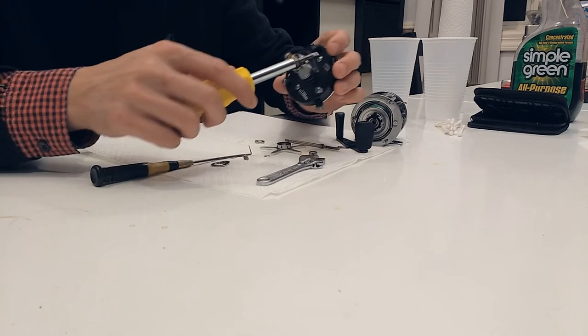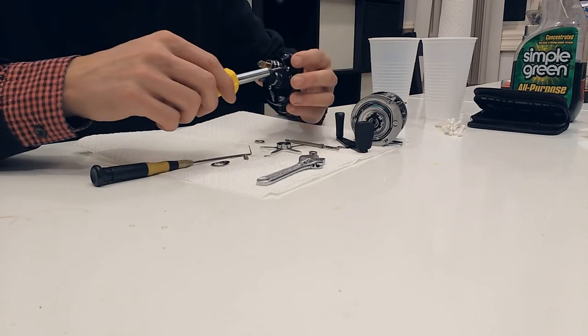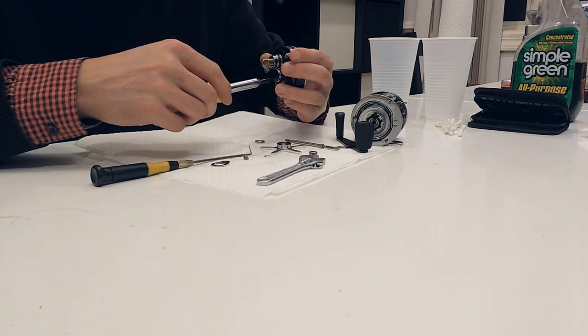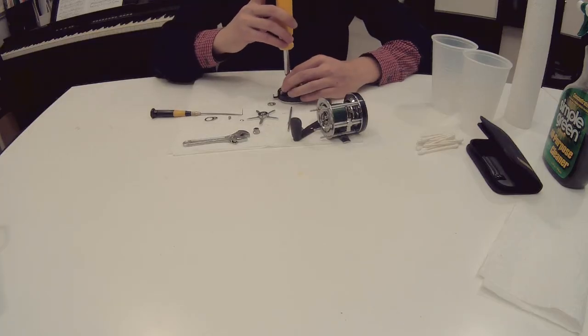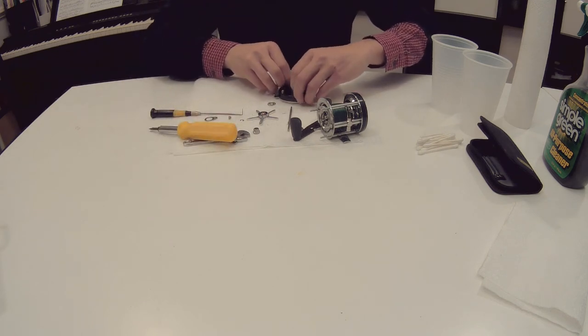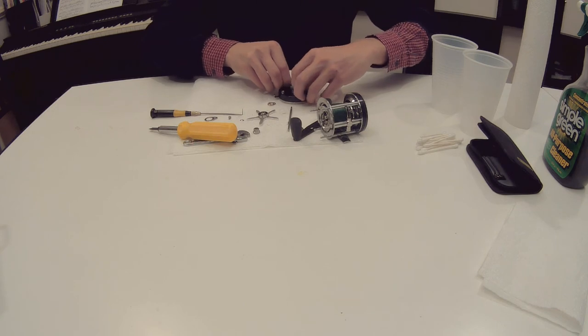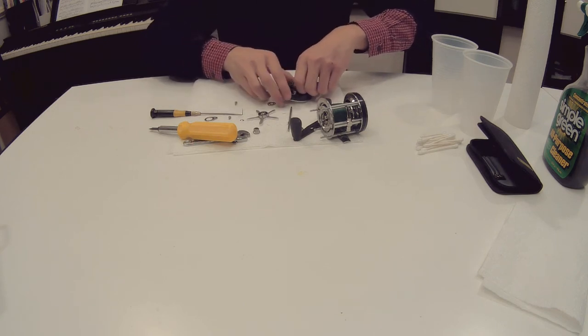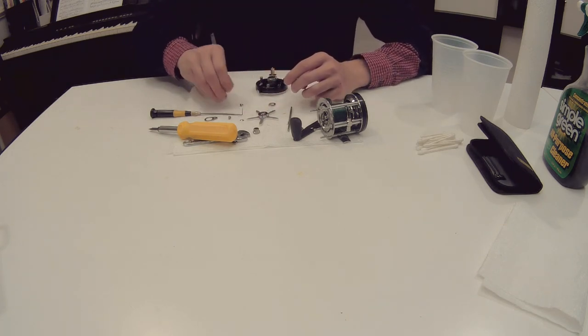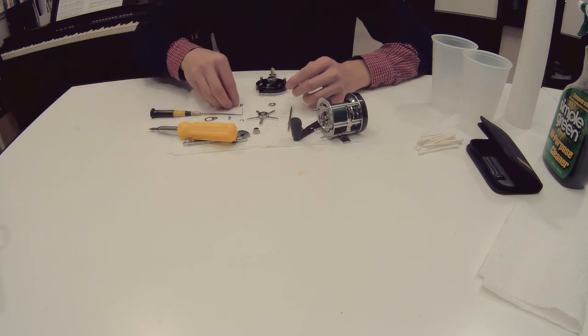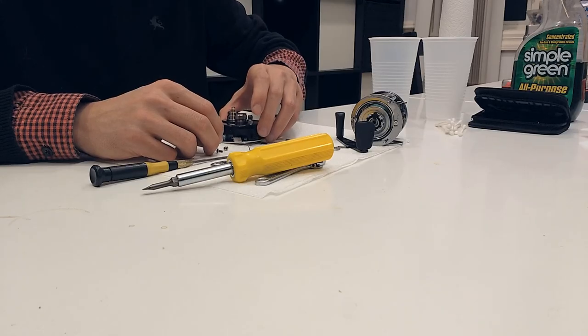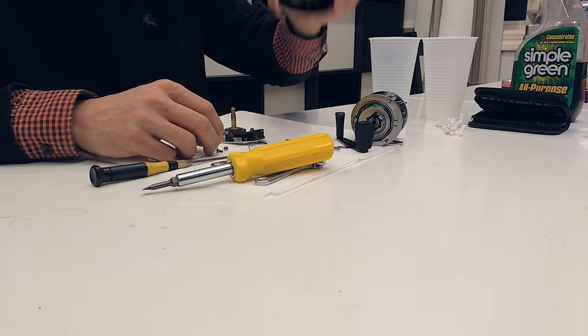And then there are two screws holding the cover onto the plate. So take these two screws off. And once again, they have gasket underneath the screws. I think it's a very good feature. Now you can lift the cover off.